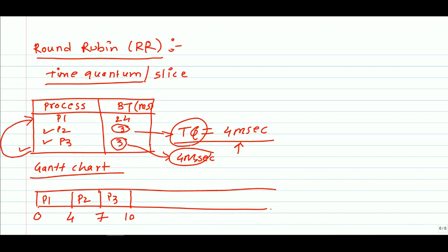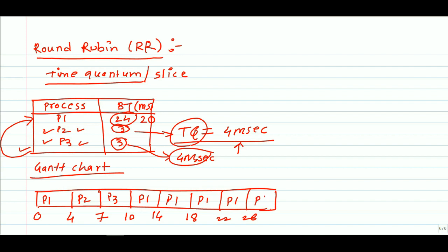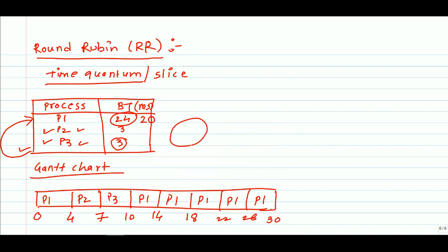After P2 and P3 complete, it goes back to P1. P1 now has a remaining burst time of 20 milliseconds. P1 gets another 4 millisecond time quantum. Since P2 and P3 are fully executed, access is given continuously to P1 for 4 milliseconds at a time until it is completely executed. After 30 milliseconds, P1 will be completely executed.